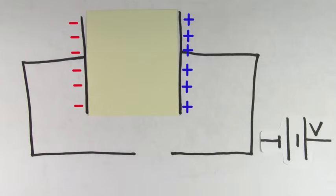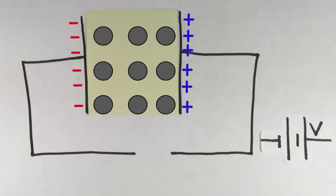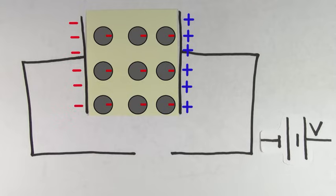The dielectric material is made out of atoms and molecules, and when placed in between the plates of this charged-up capacitor, the negative charges in the dielectric are going to get attracted to the positive plate of the capacitor. But those negatives can't travel to the positive plate since this dielectric is a non-conducting material. However, the negatives can shift or lean towards the positive plate. This causes the charge in the atoms and molecules within the dielectric to become polarized.